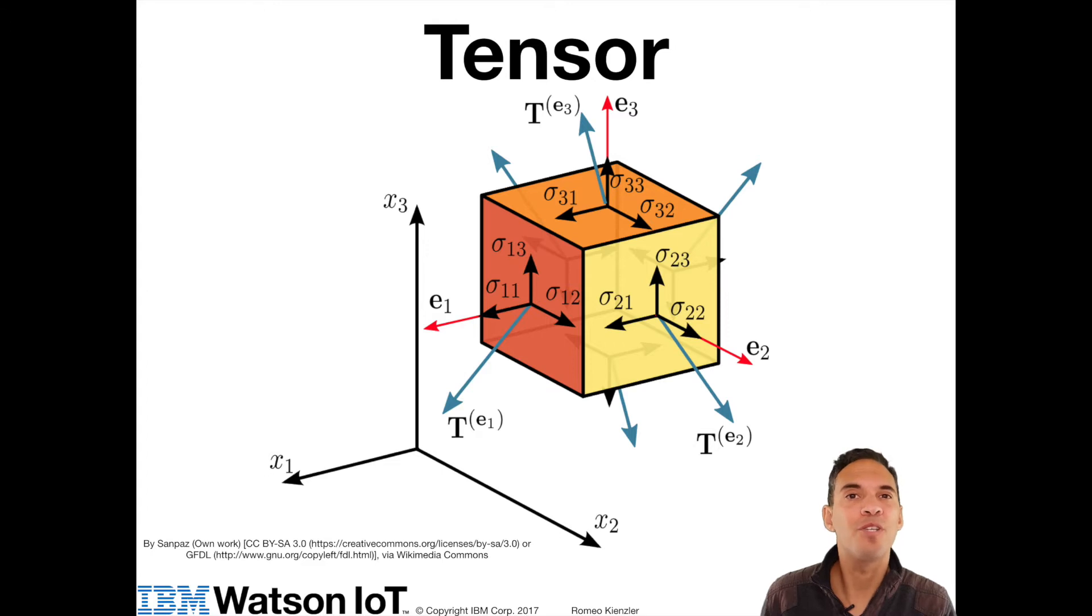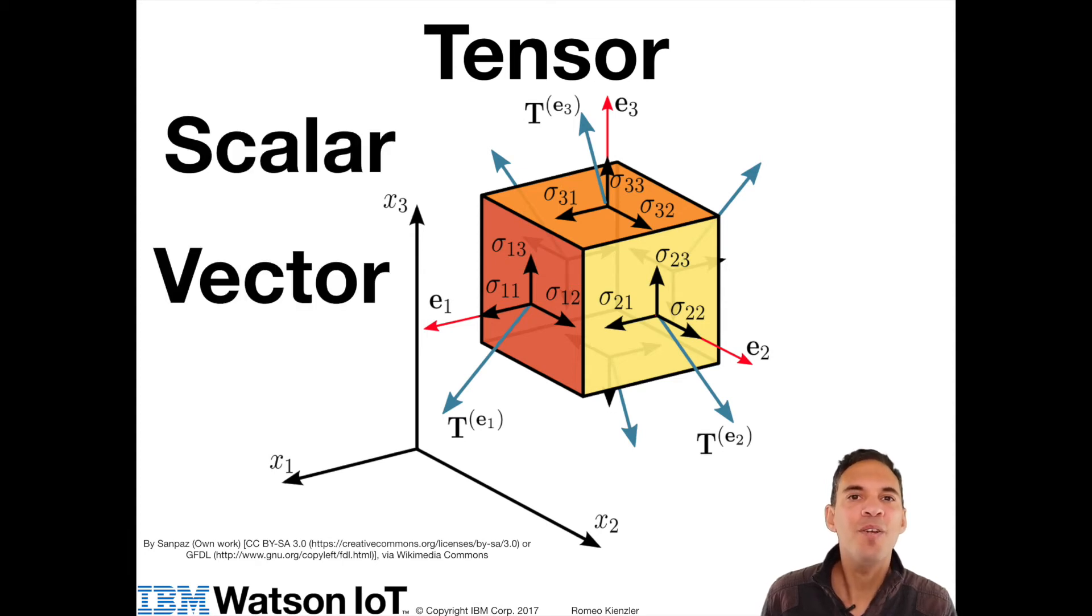So a tensor is a more general term for special cases. So for example, a 0 dimensional tensor is a scalar, a 1 dimensional tensor is a vector, a 2 dimensional tensor is a matrix.